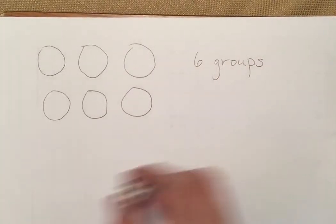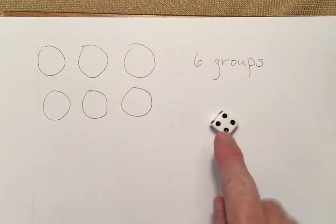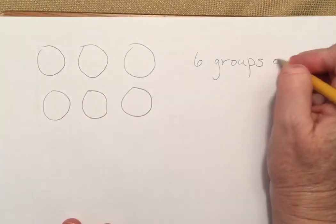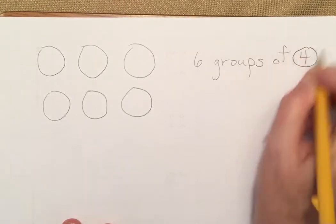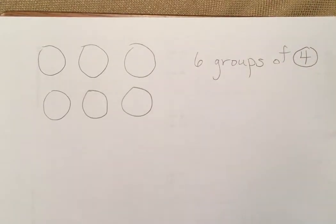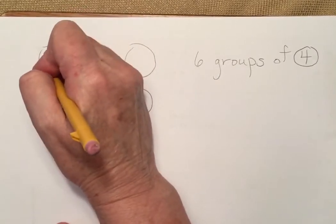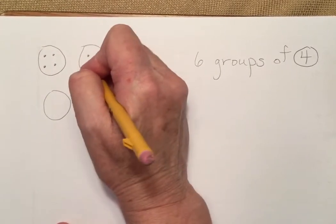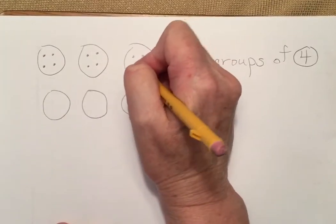Now roll again. How many inside each? Four. Six groups of four. And I'm going to circle that four because that's how many are in the group.